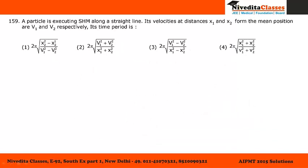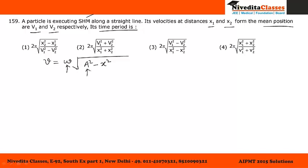Moving to question 159: a particle is executing SHM along a straight line. Its velocities at distances X1 and X2 from the mean position are V1 and V2 respectively. We have to find the time period. For SHM, velocity as a function of X is: v equals omega times the square root of (A squared minus X squared). At distance X1, velocity is V1, so V1 squared equals omega-squared A-squared minus omega-squared X1-squared.